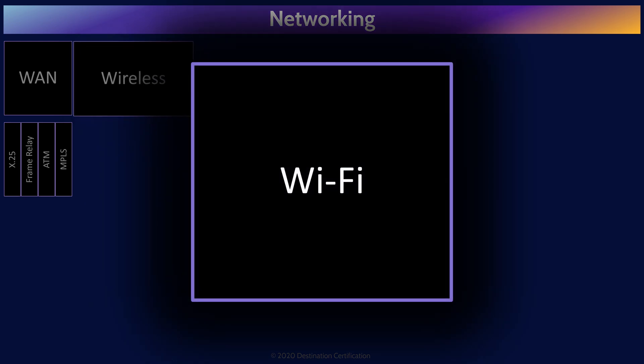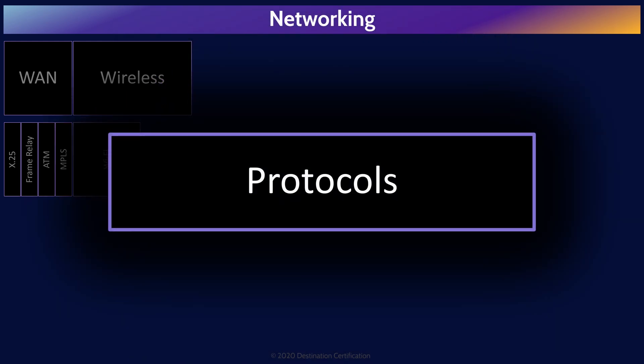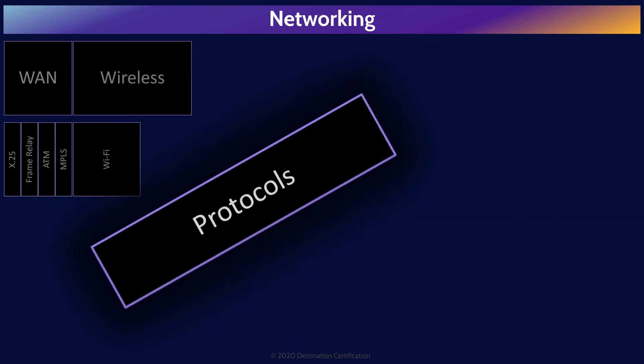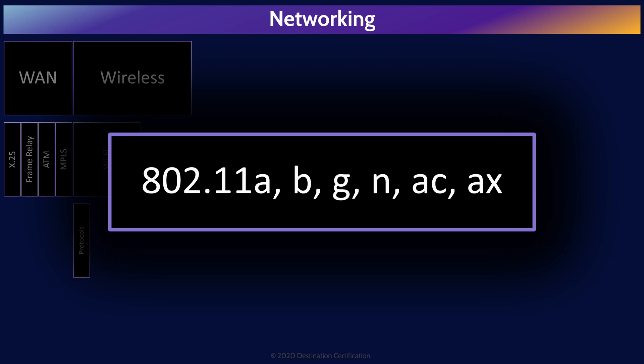We'll start with Wi-Fi, a technology that we use pervasively to create local area networks without any wires. IEEE 802.11 is the protocol we use for wireless local area networks. There have been many generations of 802.11 ratified over the last 20 plus years. You should recognize the following 802.11 standards: 802.11a, b, g, n, ac, and ax. These different versions represent the evolution of the standard towards ever greater bandwidth and capabilities.